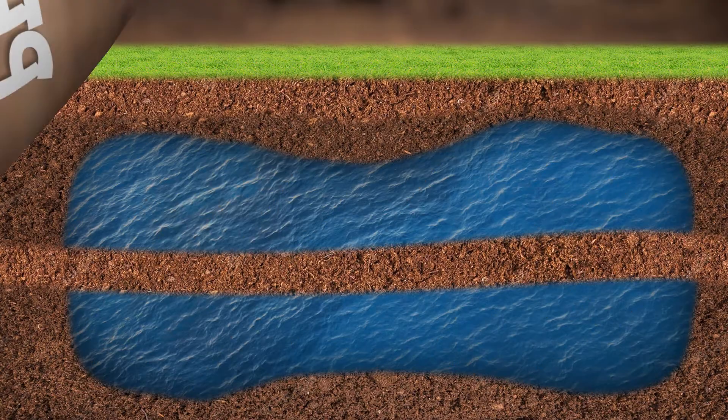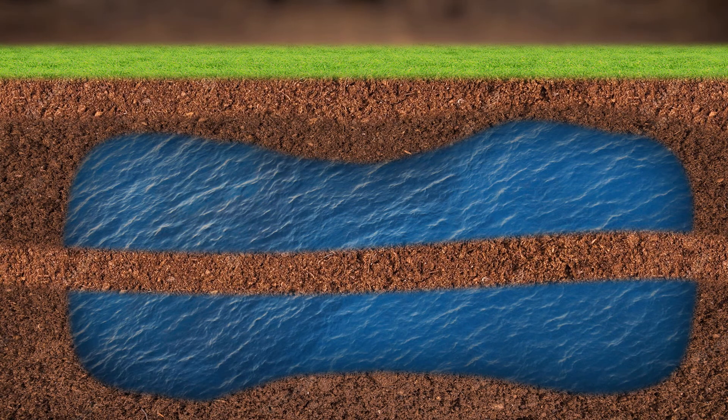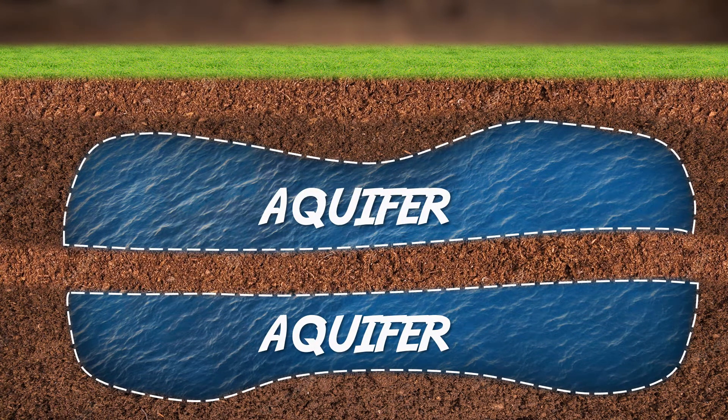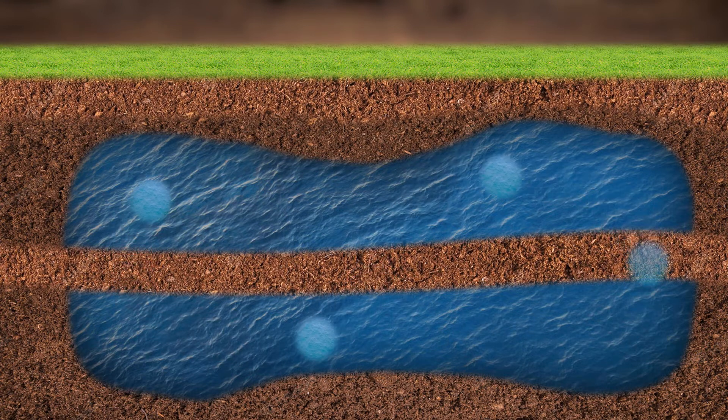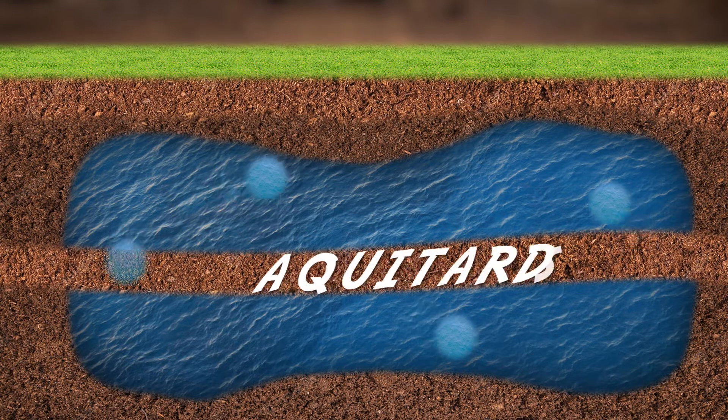Now let's get into defining aquacludes. Aquifers, or groundwater, are often found separated by layers of permeable soil, so water can easily move between one aquifer to another. These layers of permeable soil are called aquitards.